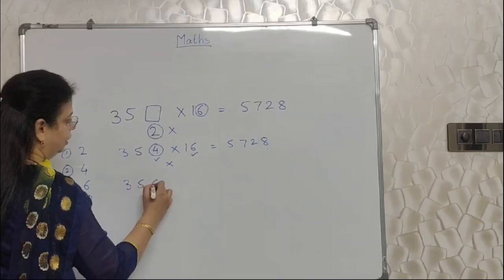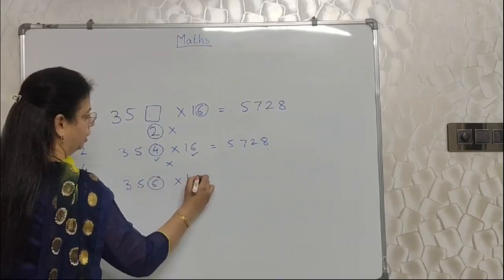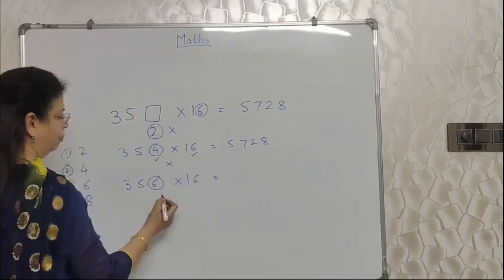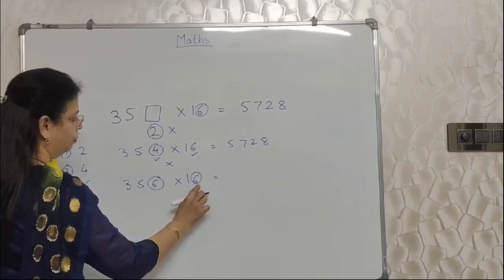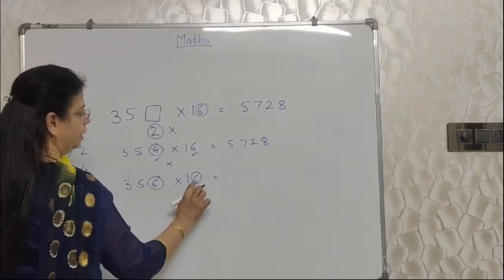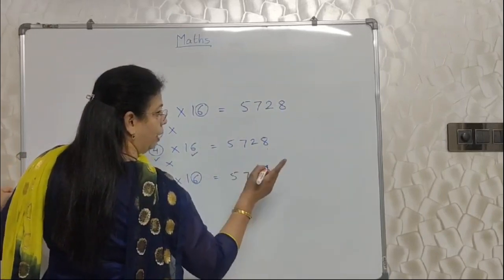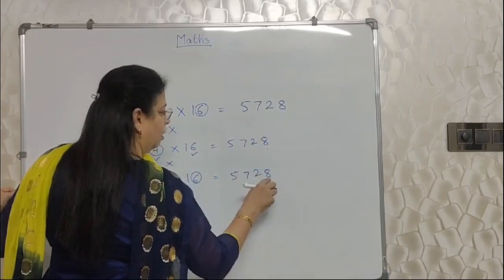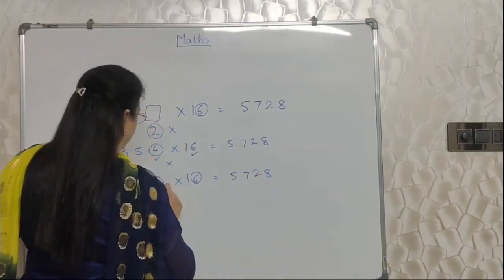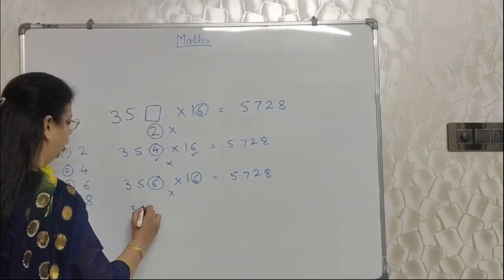Then I will put 6 in this. 356 I will put. Into 16. Again do the same thing. Units place of this. Units place of this. 6, 6 are 36. But here, 36, units place is again 6 only. But here it is 8. So this option is also wrong.